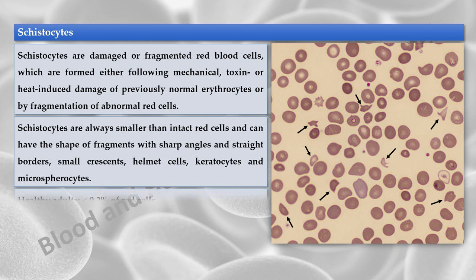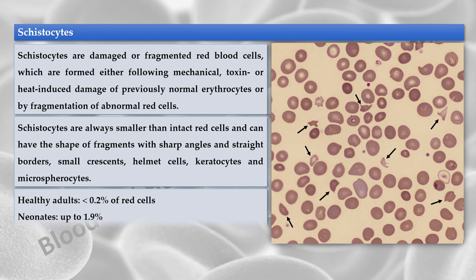In healthy adult subjects, schistocytes do not exceed 0.2% of red cells, but in neonates they may be up to 1.9%, and in premature neonates up to 5.5%.